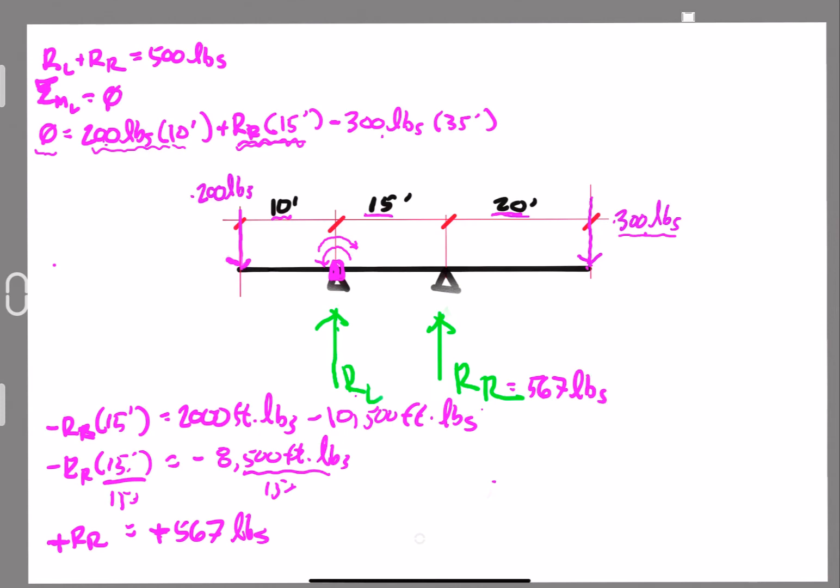Right? And now we can go back to our first equation, and we find that rL plus, now we have 567 pounds for a reaction right. That has to equal 500 pounds. And now we have something really interesting, right? If we take the 567 pounds and subtract it from both sides, we get that rL equals minus 67 pounds. Huh?